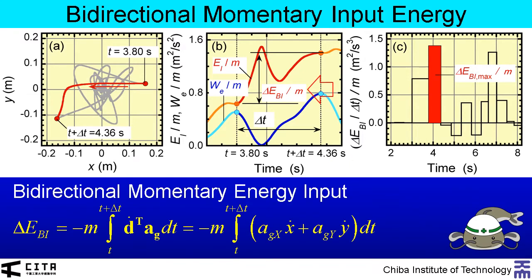The bidirectional momentary energy input is calculated from this equation as the energy input during a half-cycle. This graph shows the time history of the momentary input energy ratio per unit mass. The area of the red-painted rectangle represents the maximum momentary input energy.